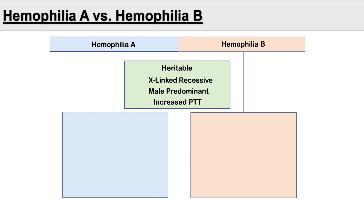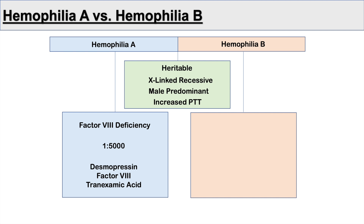However, where they differ: hemophilia A is due to a factor VIII deficiency and is a more common condition, occurring in about 1 in 5,000 males. It can be treated with desmopressin for mild forms, factor VIII concentrate, and tranexamic acid. Hemophilia B is due to a factor IX deficiency. It is more rare, affecting about 1 in 30,000 males, and is treated with factor IX concentrate and tranexamic acid.